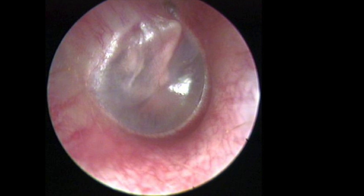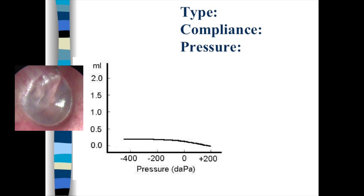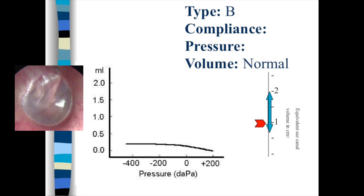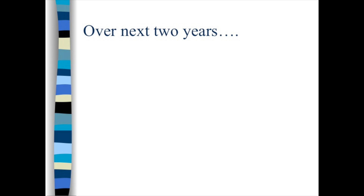Six weeks later, the child comes back for a recheck. That ear shows no erythema, but the tympanic membrane is bulging. The tympanogram shows no peak — it's flat and bottomed out. Type B. This makes sense: the fluid is preventing movement of the eardrum. Looking at the canal volume confirms it — normal volume, just as expected.